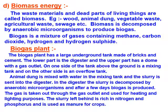The biogas plant has a large underground tank made of bricks and cement. The lower part is the digester and the upper part has a dome with a gas outlet. On one side above the ground is a mixing tank; on the other side is an overflow tank. Animal dung is mixed with water in the mixing tank and the slurry is sent into the digester, where it is decomposed by anaerobic microorganisms. After a few days, biogas is produced and taken out through the gas outlet for heating and lighting purposes.